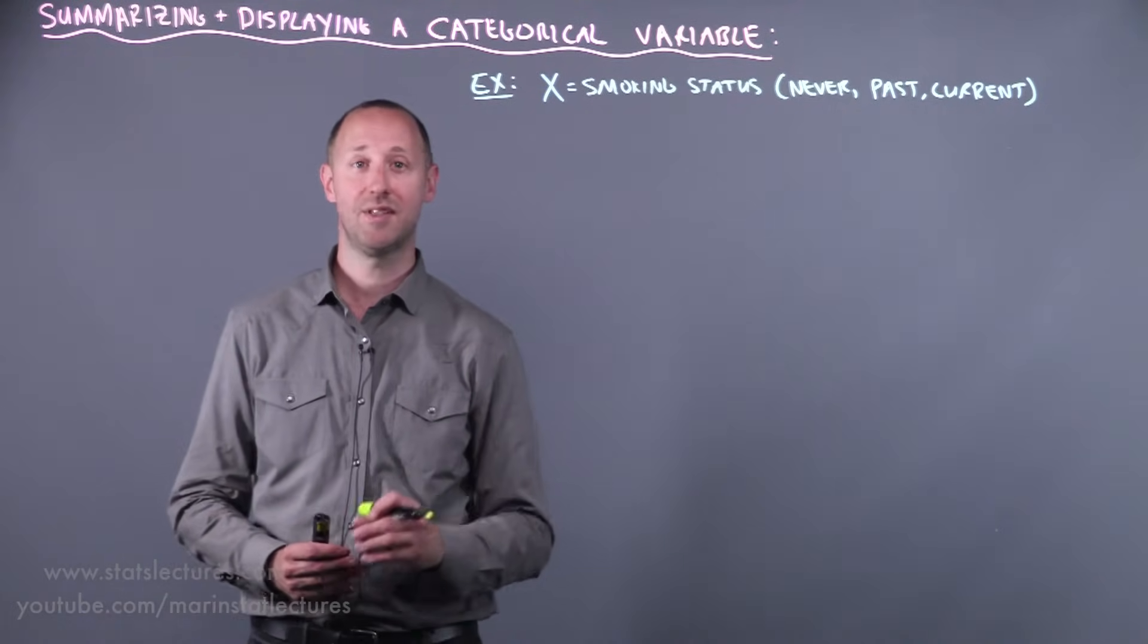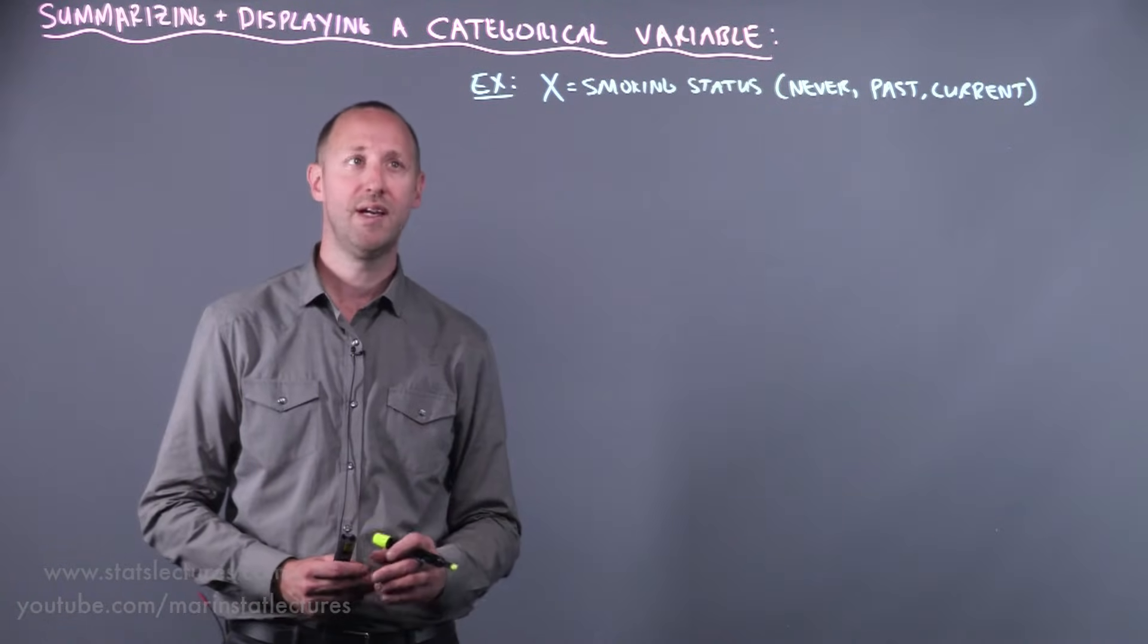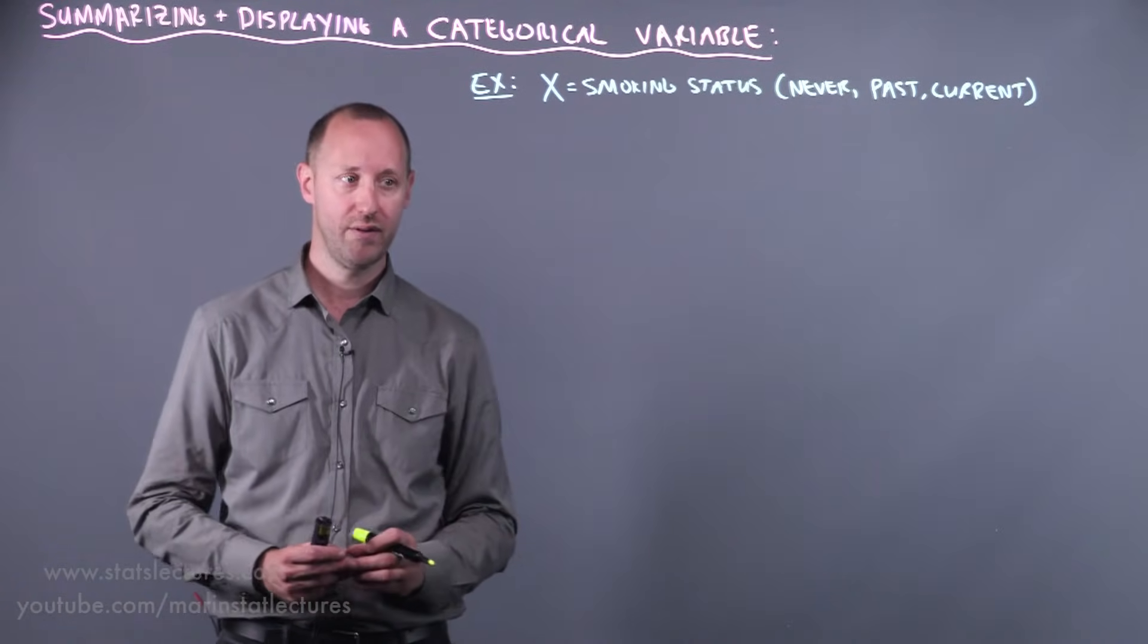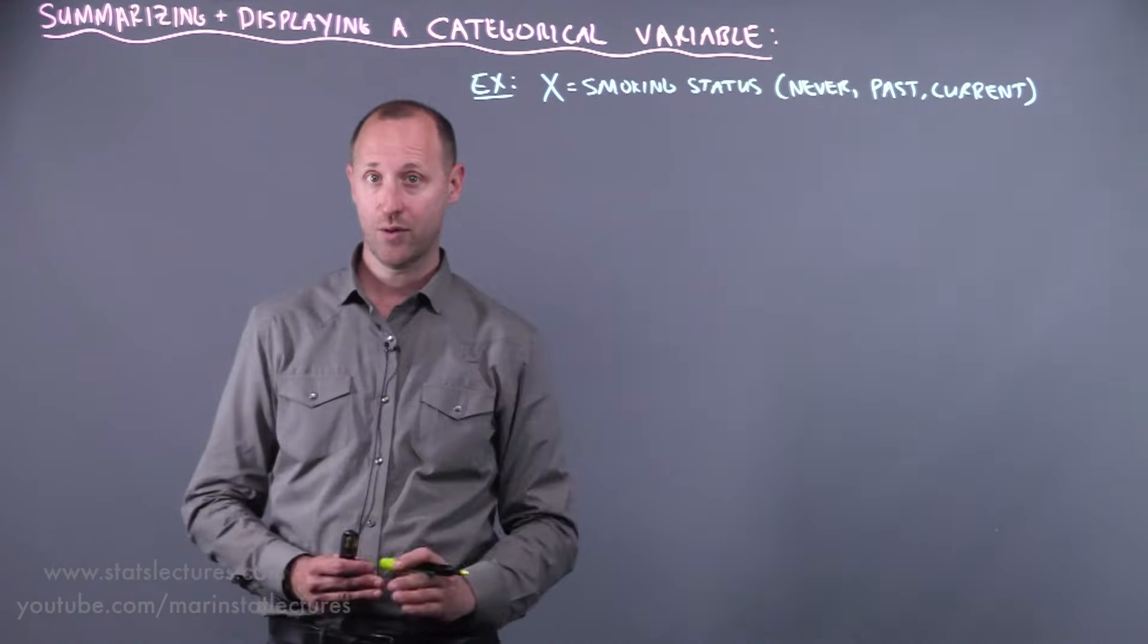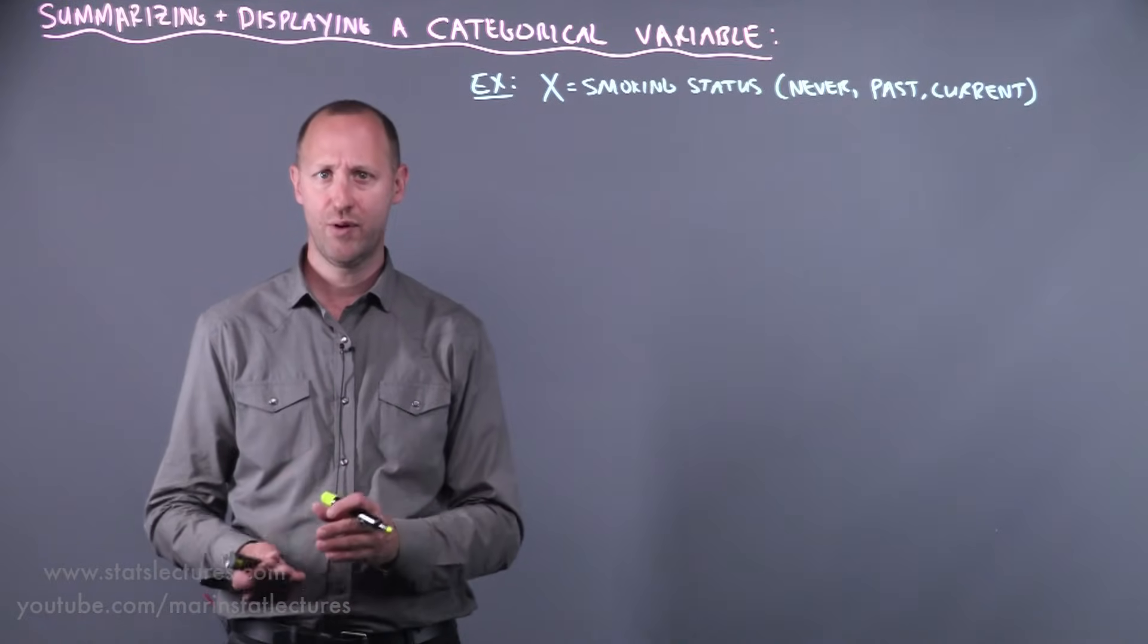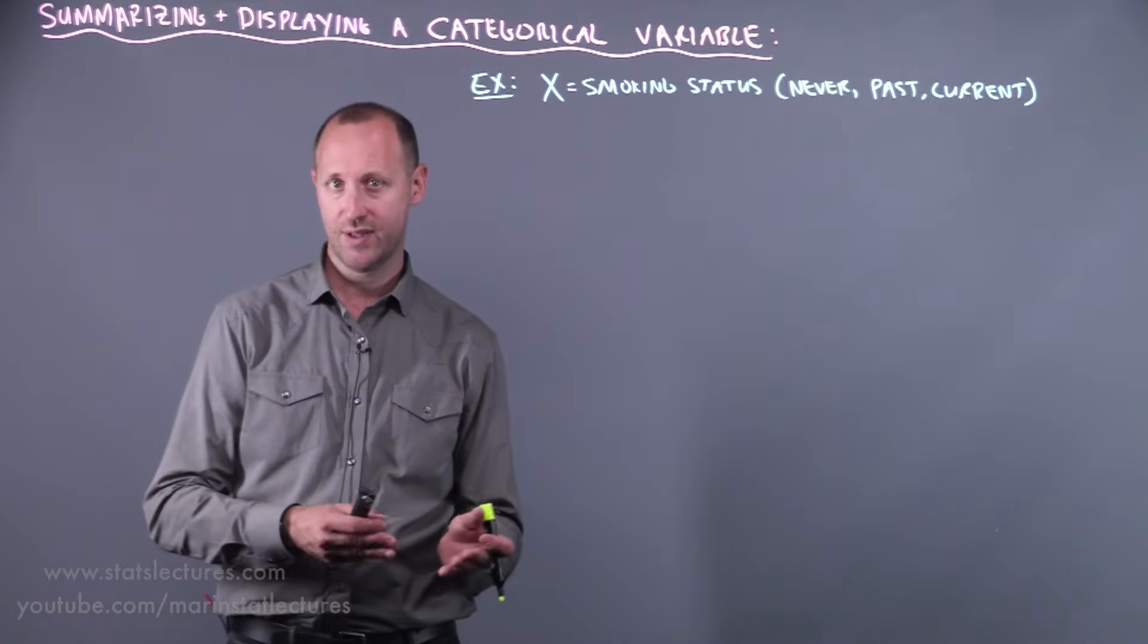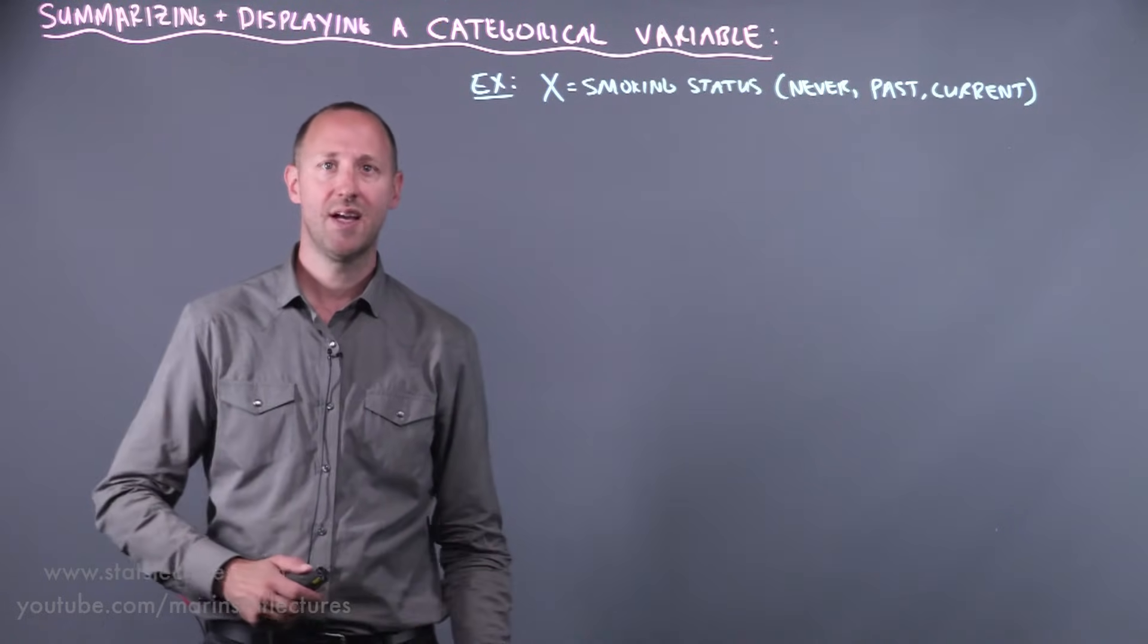Here we'll use a simple example just for the sake of discussion. The most relevant way to summarize a categorical variable is to count how many people fall into each of the categories or levels of the variable, and then summarize that using a frequency, a relative frequency which also gets called a proportion, or a percentage. So let's take a look at doing that.